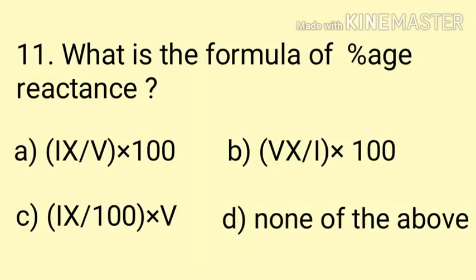Question number 11. What is the formula for percentage reactance? Percentage reactance ka formula hai: (I × X) / V × 100 — that means full load current into reactance upon voltage into 100. Here the correct answer is Option A.